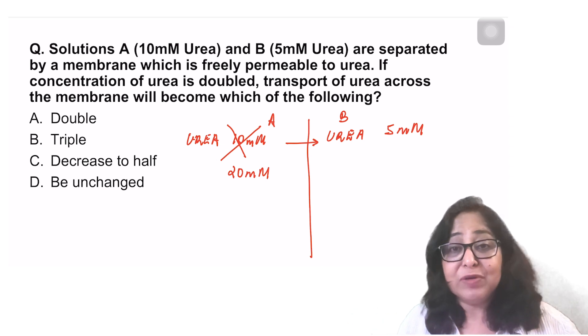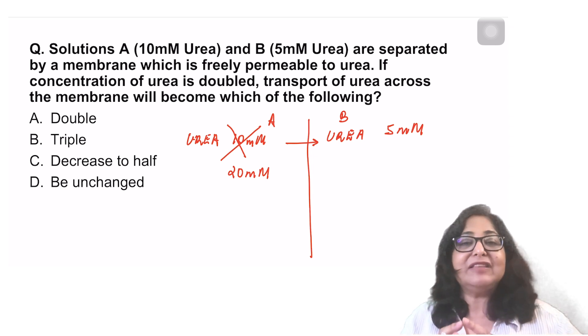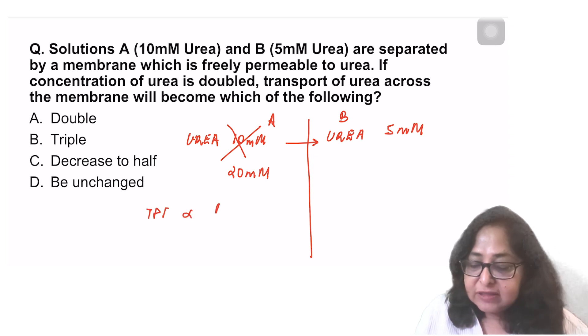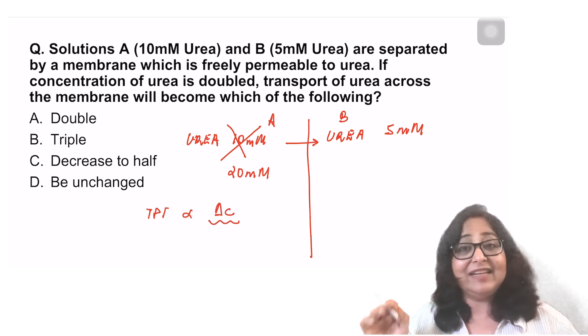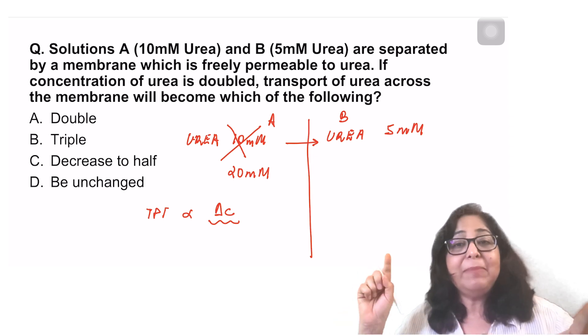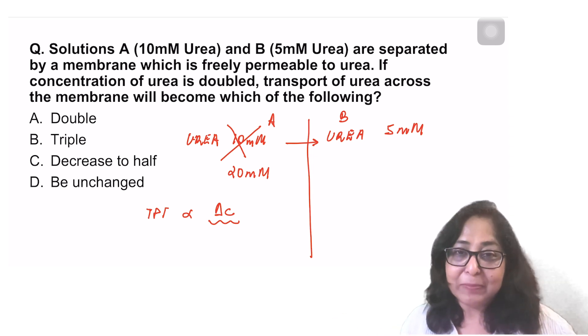This is a passive movement of urea, not requiring energy. And for any passive movement, it will be directly proportional to the concentration gradient, delta C. It is not proportional to the concentration, but the concentration gradient, the difference in the concentration on the two sides of the membrane.